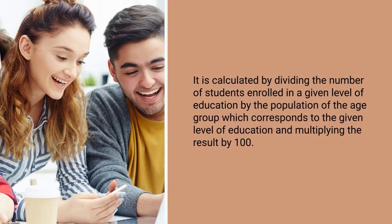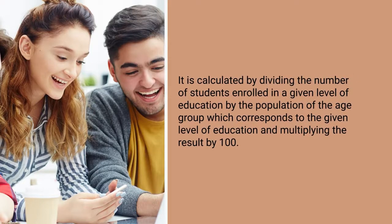to which the particular level of education has reached the wider populations or not. Generally, it is calculated by dividing the number of students enrolled in a given level of education by the population of the age group which corresponds to the given level of education, and multiplying the result by 100.